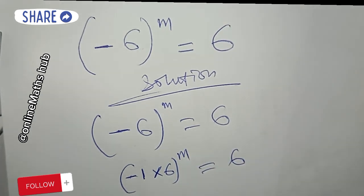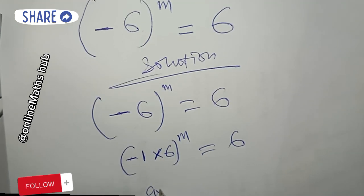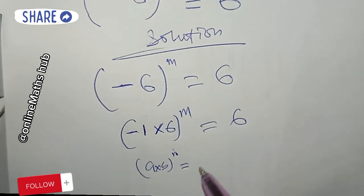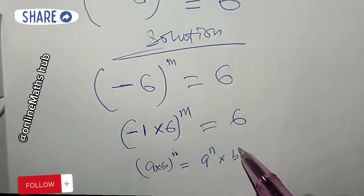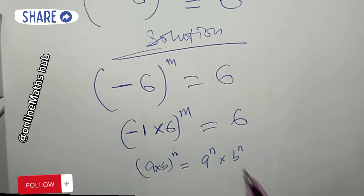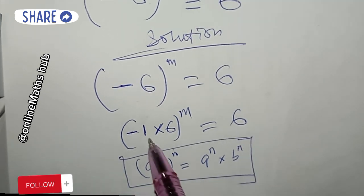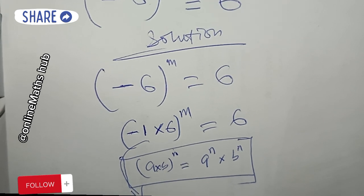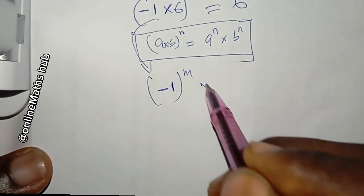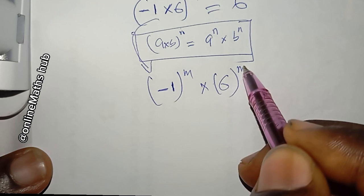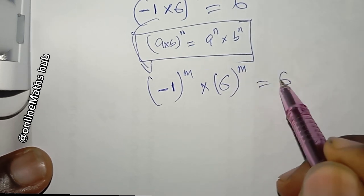I can expand this further. If you have a times b to the power n, you can expand this to a to the power n multiplied by b to the power n. So I'm going to use that rule here, giving me negative 1 to the power m multiplied by 6 to the power m, equal to 6.